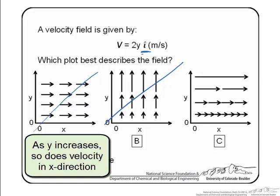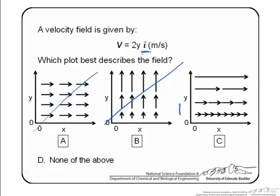So then we look at the last choice and we see that as we increase in the y direction our x component of velocity is increasing. And we could see that as we increase y our x direction is doubling. So option C is a plot that best describes the velocity field given above.